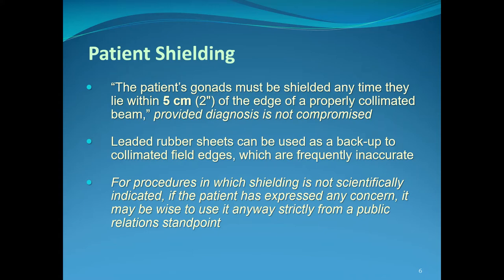Leaded rubber sheets can be used as a backup to collimated field edges, which are frequently inaccurate. A good example is using leaded rubber sheets at the posterior aspect of the patient for lateral thoracic or lateral lumbar spine images, because that extra thick body tends to scatter a lot of x-rays and leads to fogging on the image. Placing a leaded rubber sheet right at the edge of the collimated field can clean up the images. Leaded rubber sheets don't lower patient exposure since they're placed on the tabletop or image receptor, but they do improve image quality. To be clear, leaded rubber sheets are not a type of patient shielding.